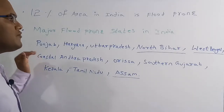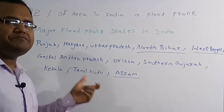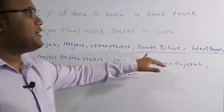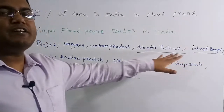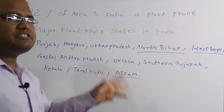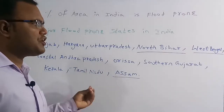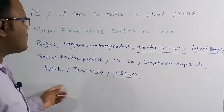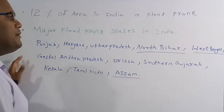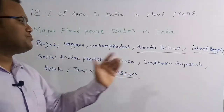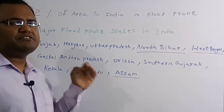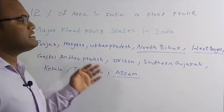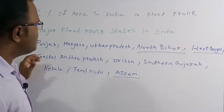Out of these states, the most severe flood zones occur in the states of North Bihar, West Bengal, and Assam. These three states experience the majority of flood-prone incidents every year, compared to the remaining states.